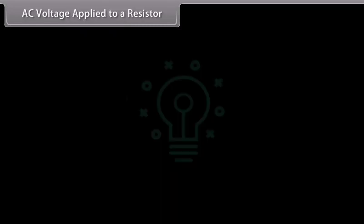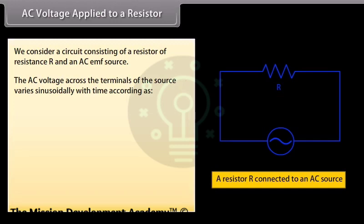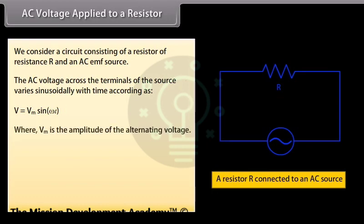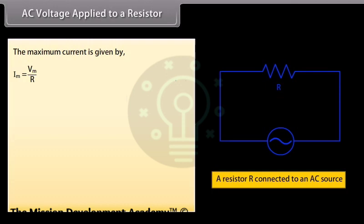AC voltage applied to a resistor: we consider a circuit consisting of a resistor of resistance R and an AC EMF source. The AC voltage varies sinusoidally as V = Vm sin(ωt), where Vm is the amplitude and ω is the angular frequency. Applying Kirchhoff's rule in the loop, we get I = (Vm / R) sin(ωt), with maximum current Im = Vm / R.